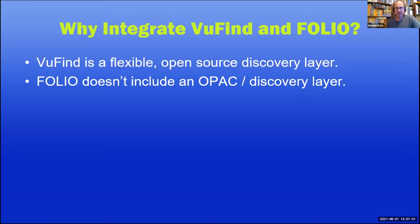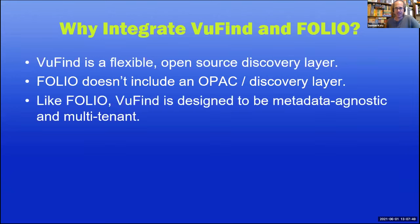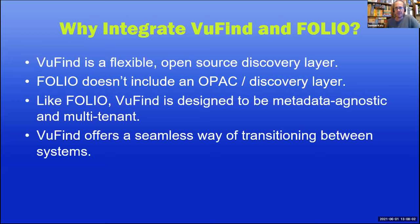Like Folio, VUFind is designed to be both metadata agnostic — it can work well with MARC data but also with other types of data — and multi-tenant, supporting large-scale situations where you're potentially serving different instances to different people. VUFind also offers a seamless way of transitioning between systems. By separating your user interface layer from your backend systems, you insulate your user base against change when you make internal architectural changes. For example, if you're considering migration to Folio but aren't ready to commit, you could stand up a VUFind instance in front of your current system, then reconfigure VUFind to talk to Folio later, and the user experience would remain essentially the same.